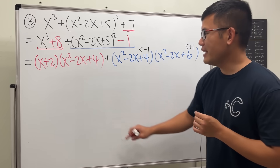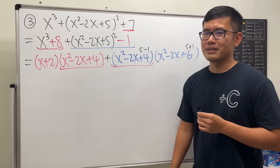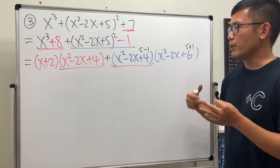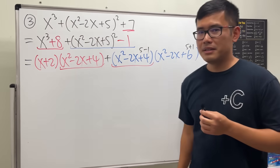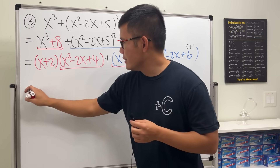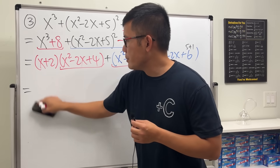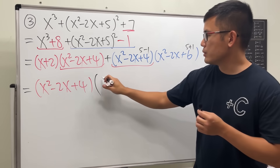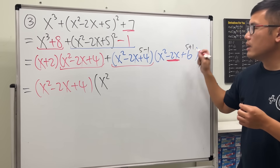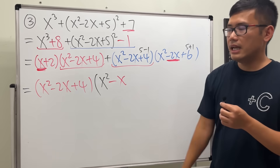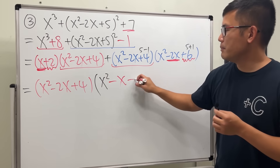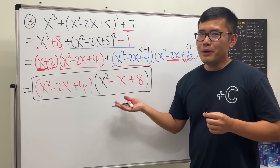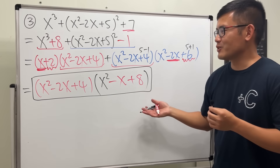Notice both groups share the common factor x squared minus 2x plus 4. Combining the remaining factors: from the first group we have (x plus 2), from the second group we have (x squared minus 2x plus 6). Together the second factor is x squared minus 2x plus 6 plus x plus 2, giving x squared minus x plus 8. So the final factorization is (x squared minus 2x plus 4)(x squared minus x plus 8). None of the quadratic factors here are further factorable.